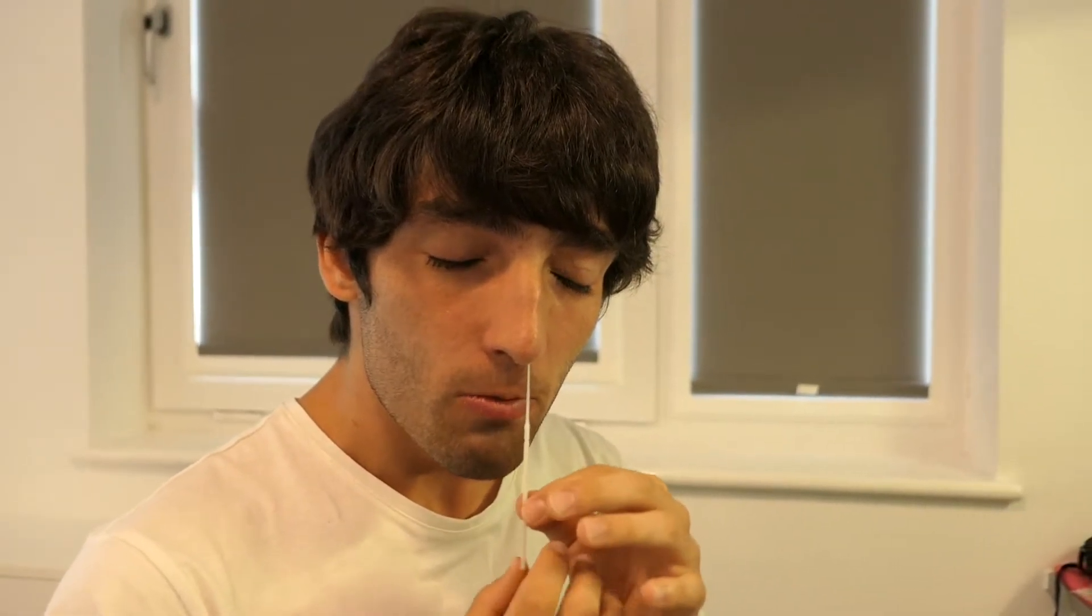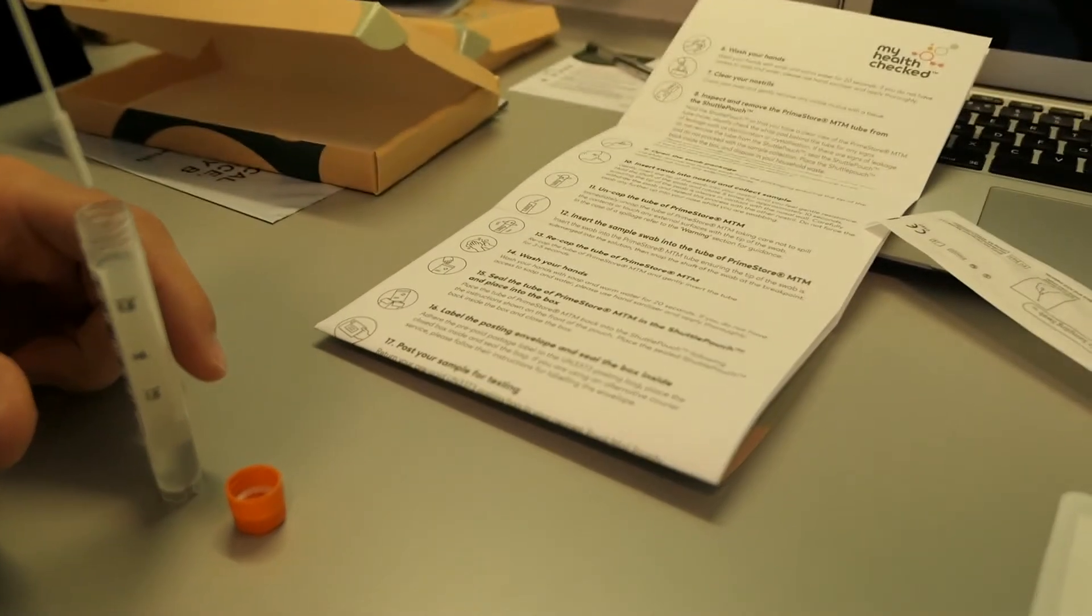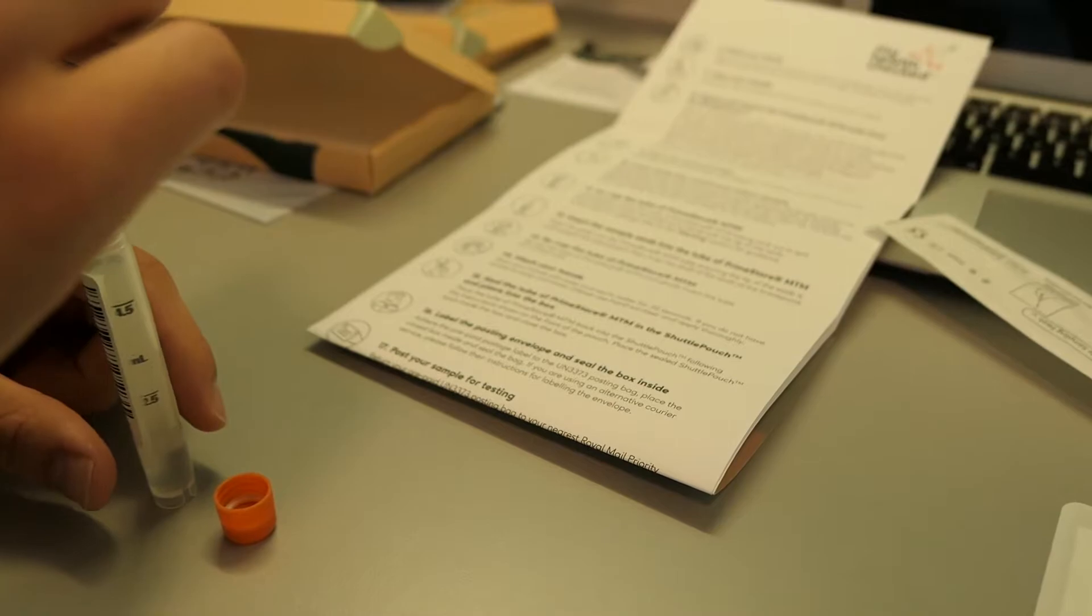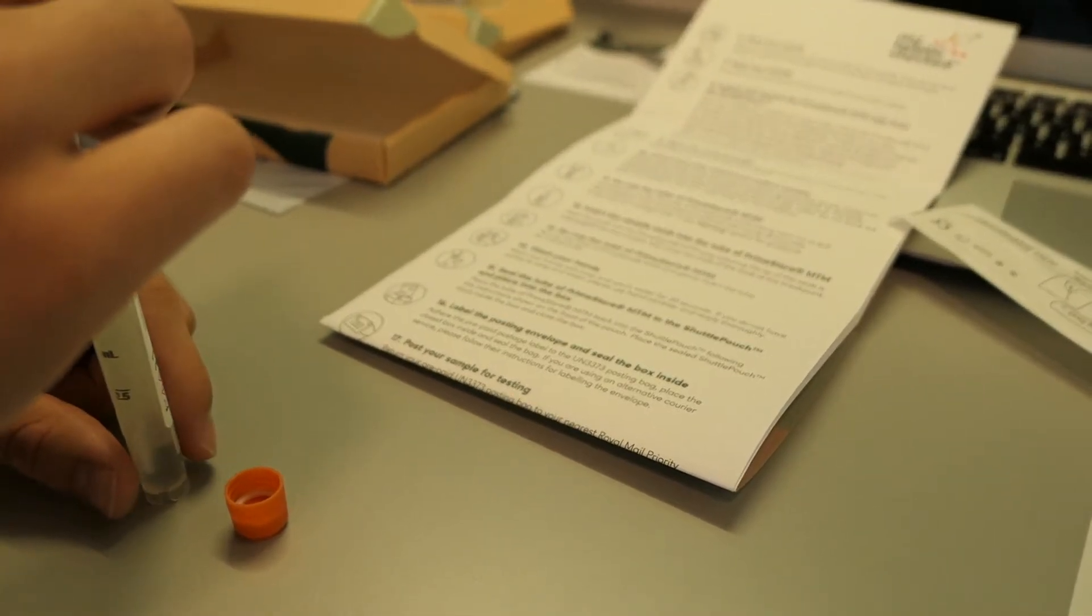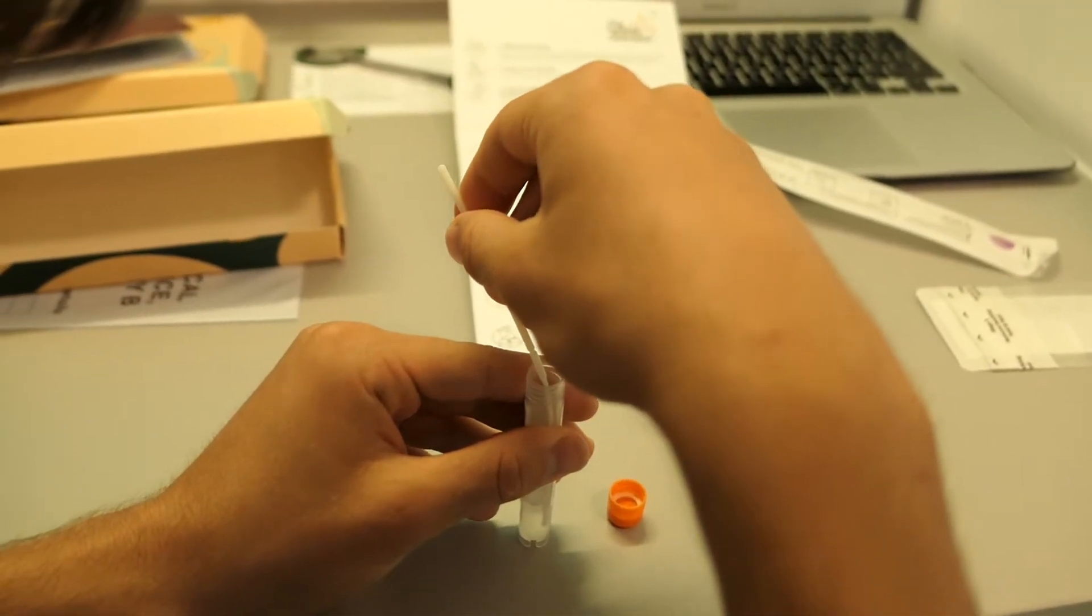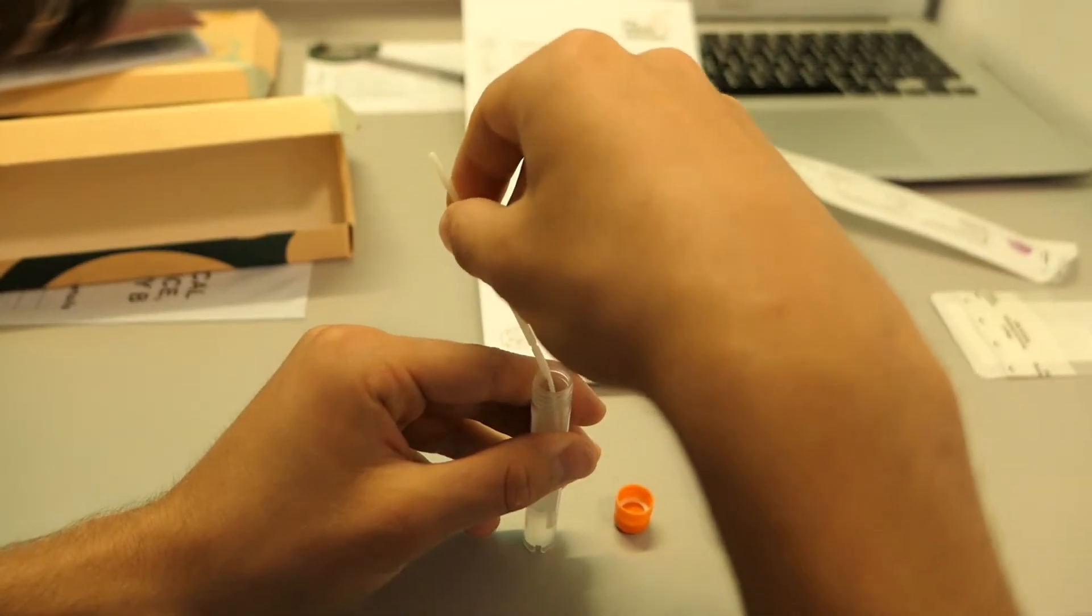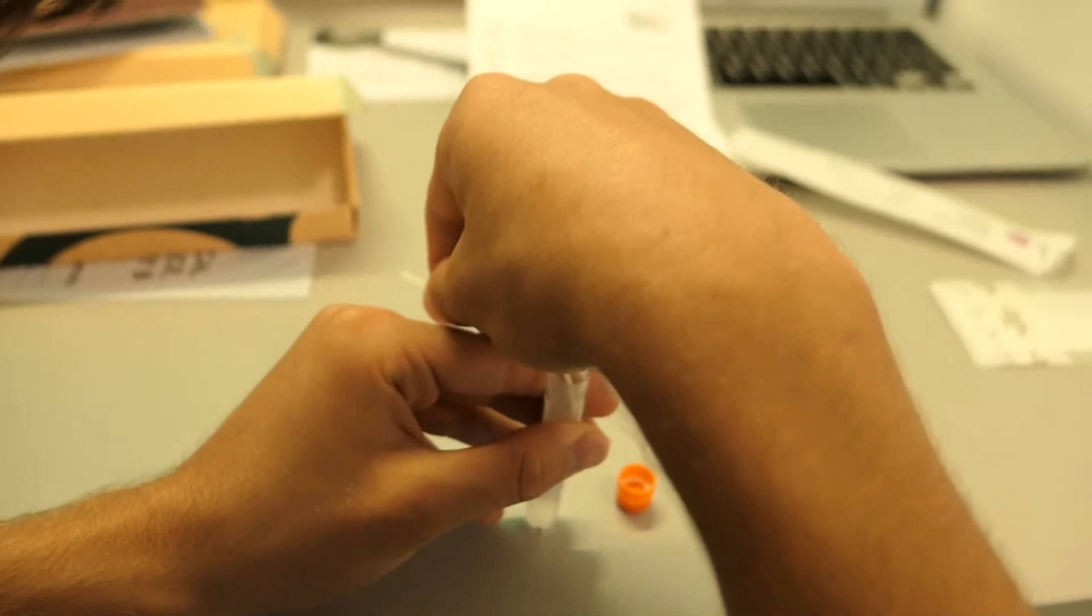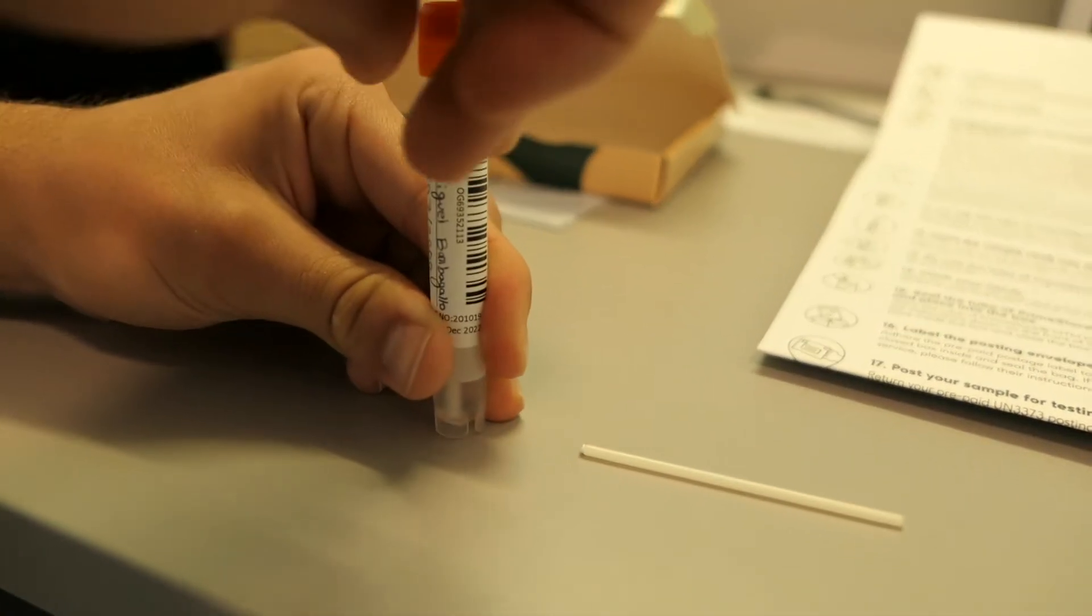Carefully withdraw the swab and repeat this process with the other nostril. Immediately, uncap the tube of Primestore MTM, taking care not to spill the contents or touch any external surfaces with the tip of the swab. Insert the swab into the tube, ensuring the tip of the swab is submerged into the solution and then snap the shaft of the swab at the break point.